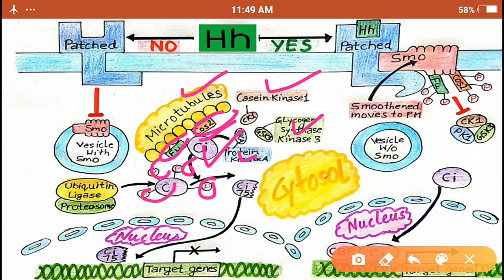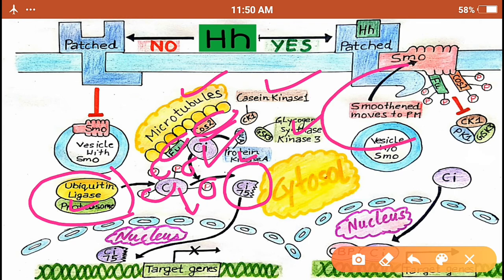The CI, now ubiquitinated, is sent to the proteasome. When it is sent to the proteasome, it results in proteasomal degradation and then we get this CI-75. Now you can see its structure is like this.